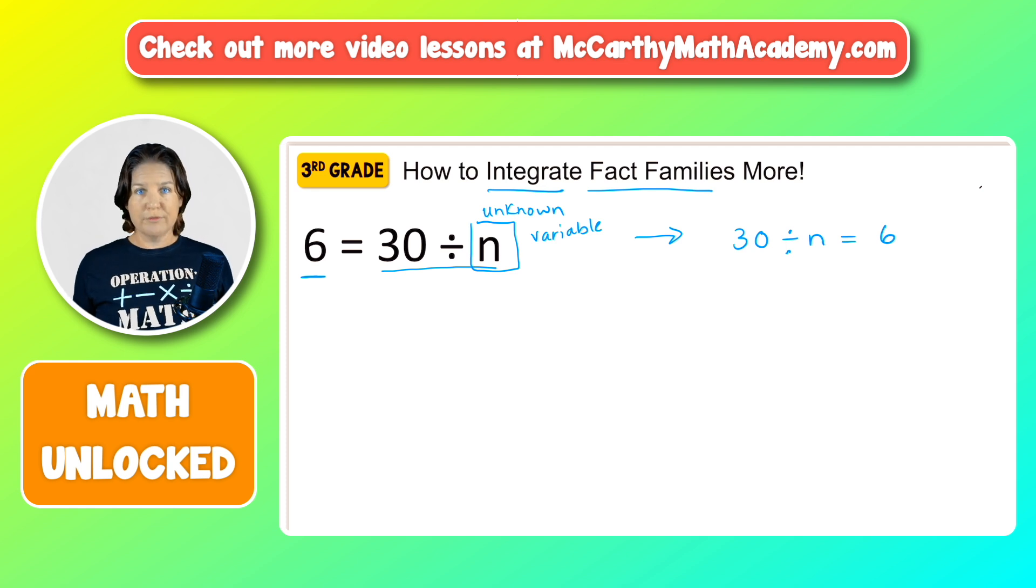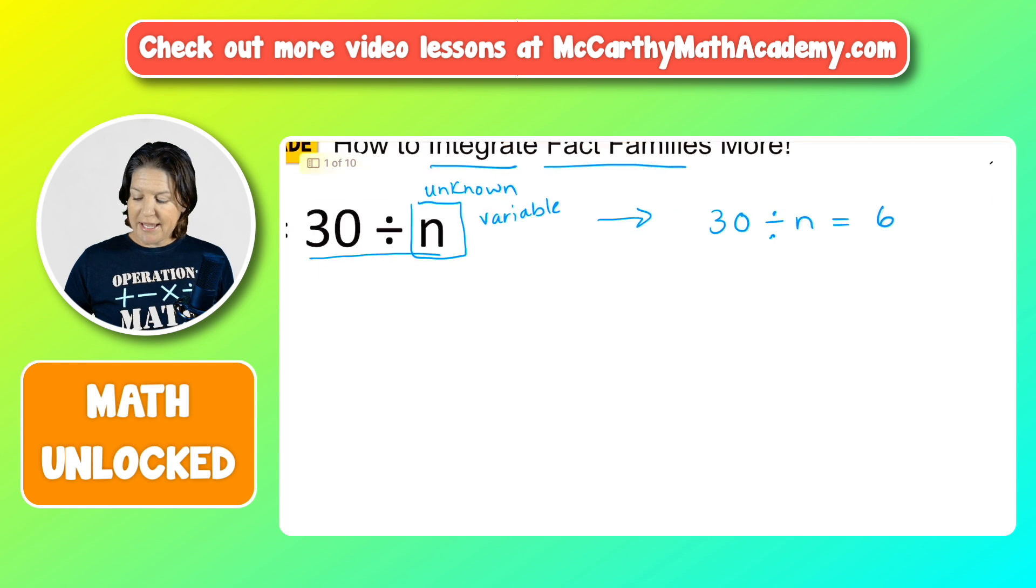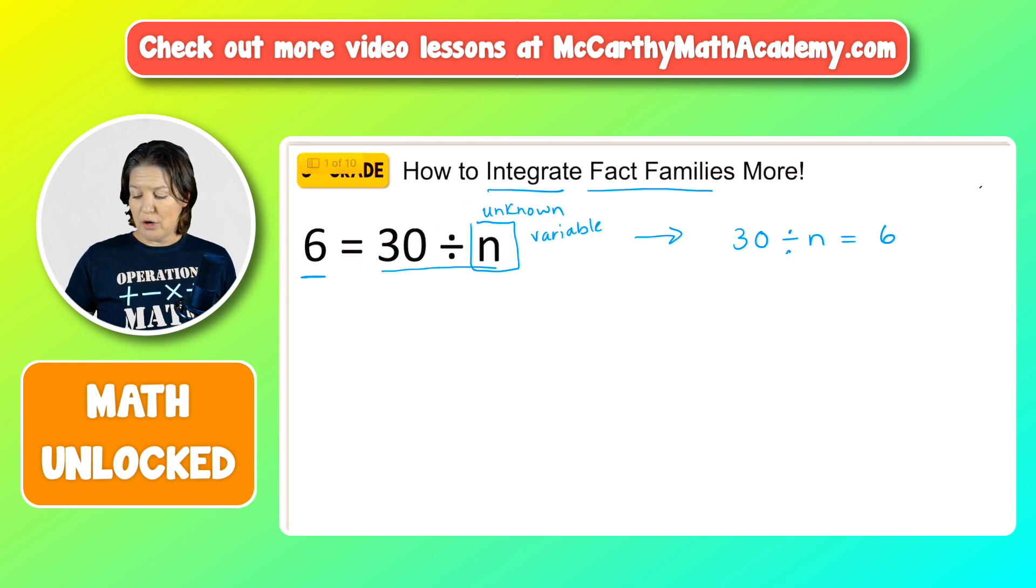This might look a little bit more comfortable for your students. Now, they're probably also going to say, what is this right here? This N? What does that even mean? Why are there letters in math? That's what third graders especially will often say. And we can say, look, we've seen this before. It's like 30 divided by what number equals 6? Sometimes we've seen it as a question mark. And now we're getting all fancy and we're just putting a letter there to show that we don't know that value yet. It's called a variable.